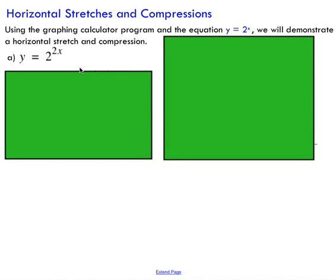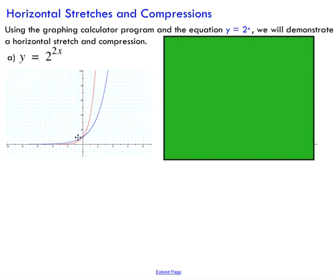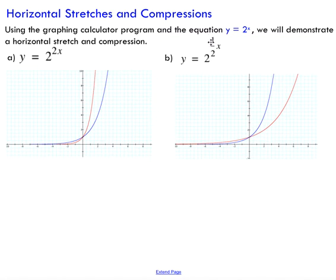For horizontal stretches and compressions, the same rules apply. If we multiply by a number greater than 1 in front of the x value, we call that a horizontal compression — you can see the blue base graph and the compressed graph is thinner by a factor of 2. This still passes through (0, 1) because compressing 0 by a factor of 2 still gives 0. If we multiply by a number between 0 and 1, we get a horizontal stretch, and the red graph is stretched in the horizontal direction, also still passing through (0, 1).